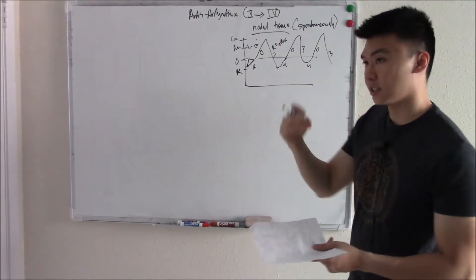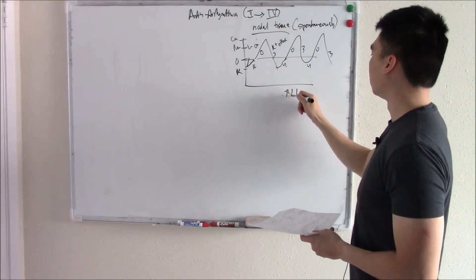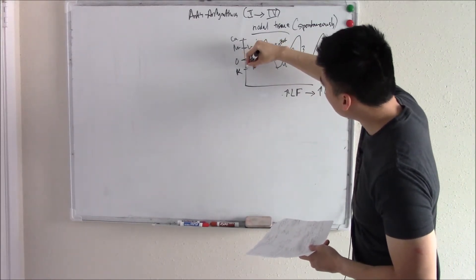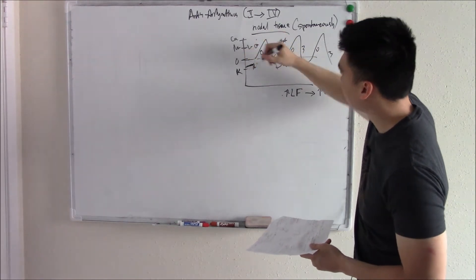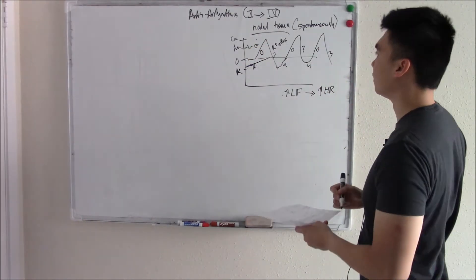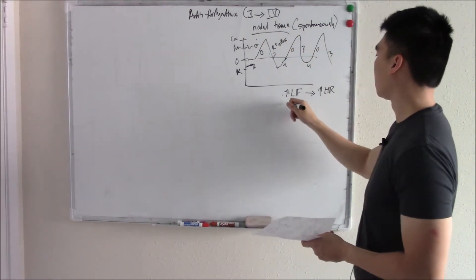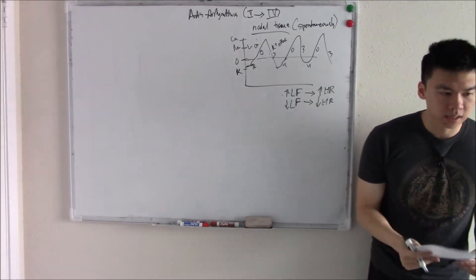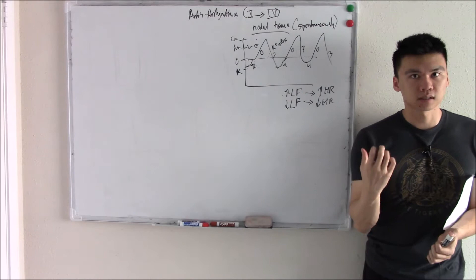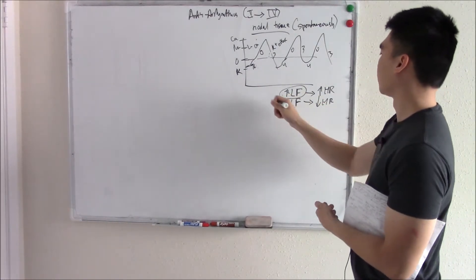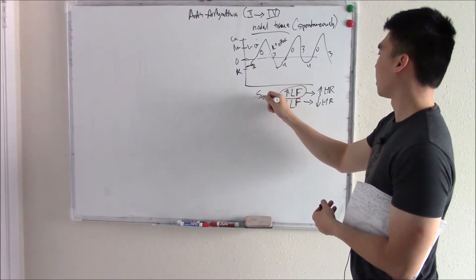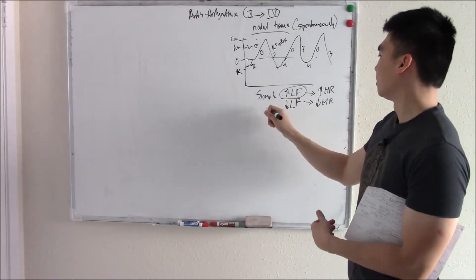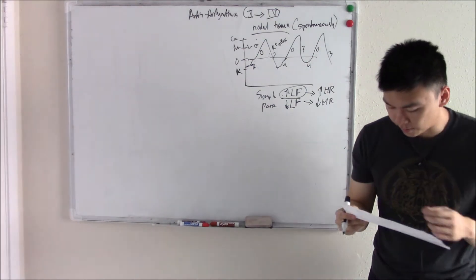If you have a lot of these leaky sodium channels, you can depolarize very quickly and that increases your heart rate. If you have very few, you have minimal leakage, you won't reach threshold, you have a very low slope — that decreases your heart rate. The sympathetic fight-or-flight response increases heart rate by increasing your leaky funny sodium channels. The parasympathetic rest-and-digest response decreases heart rate by decreasing these sodium channels.